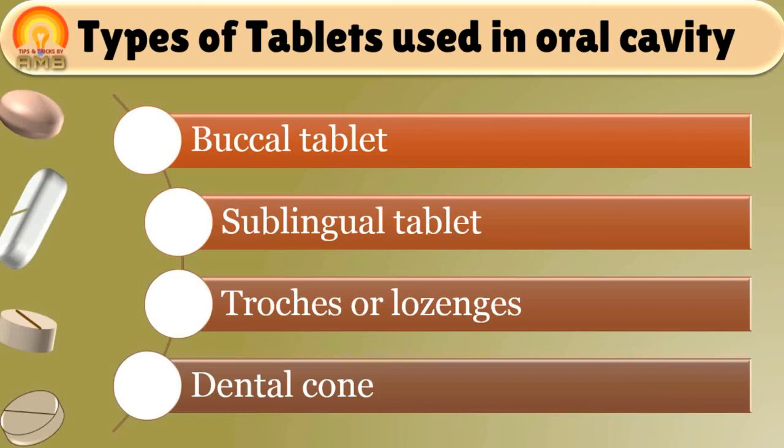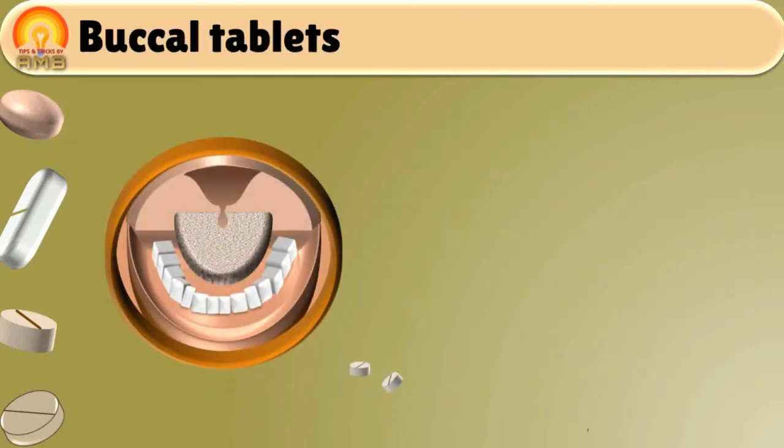First is buccal tablet. As name indicates, these are the tablets which are to be placed in mouth cavity in between the gums and lips or gums and cheeks. Drug is dissolved or disintegrated slowly in mouth cavity.